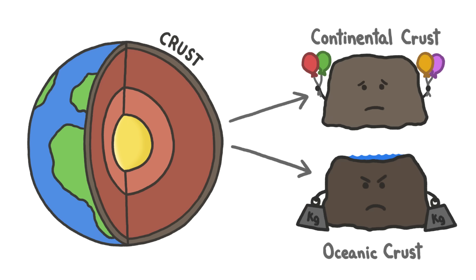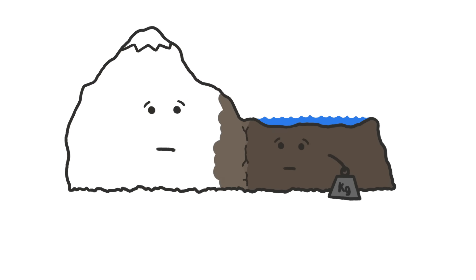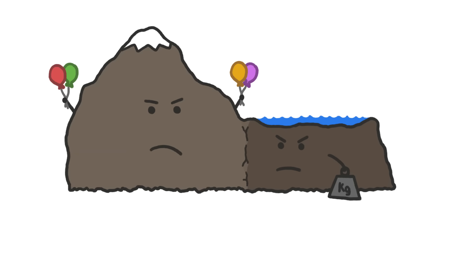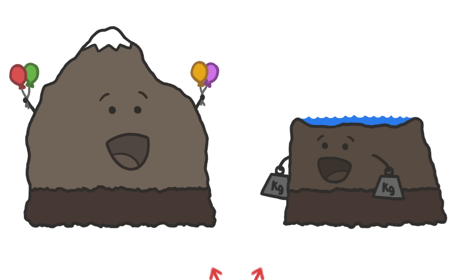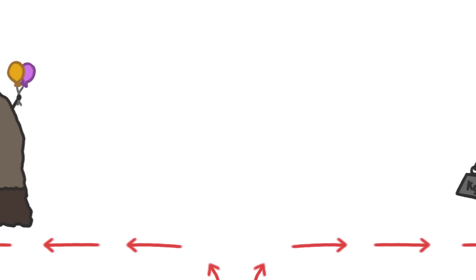And this density difference has major consequences because ocean floors and continents don't just sit there. Together with the rocky mantle below them, they're broken up into big plates that ride around on convection currents flowing deep inside of Earth.